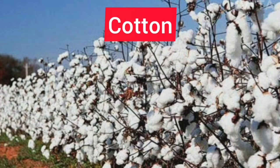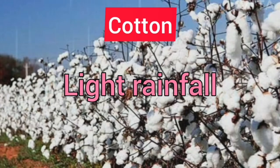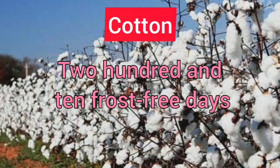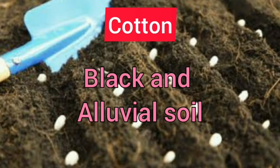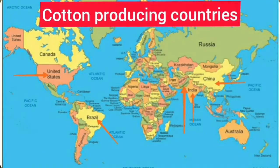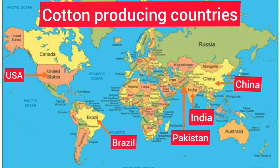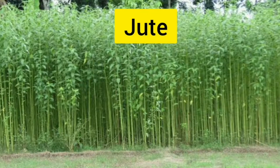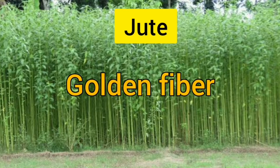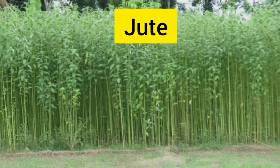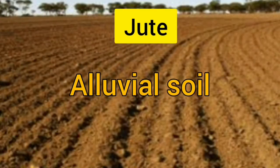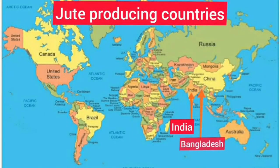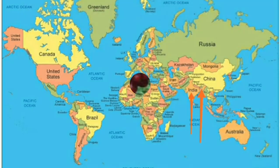Cotton requires high temperature, light rainfall, 210 frost-free days, and bright sunshine for its growth. It grows best in black and alluvial soil. The main producing countries are China, USA, India, Pakistan, and Brazil. Jute, also known as golden fiber, requires high temperatures, heavy rainfall, and a humid climate. It grows well on alluvial soil. India and Bangladesh are the leading producers of jute.